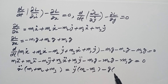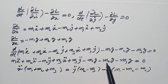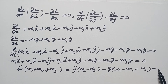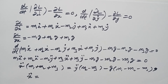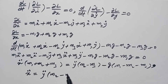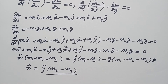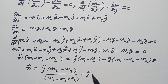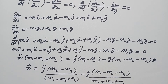After rearranging, we get (m1 + m2 + m3)ẍ + (m3 − m2)ÿ = (m1 − m2 − m3)g. Solving for ẍ: ẍ = [(m2 − m3)/(m1 + m2 + m3)]ÿ − g(m1 − m2 − m3)/(m1 + m2 + m3). So the x-component of acceleration depends on ÿ.